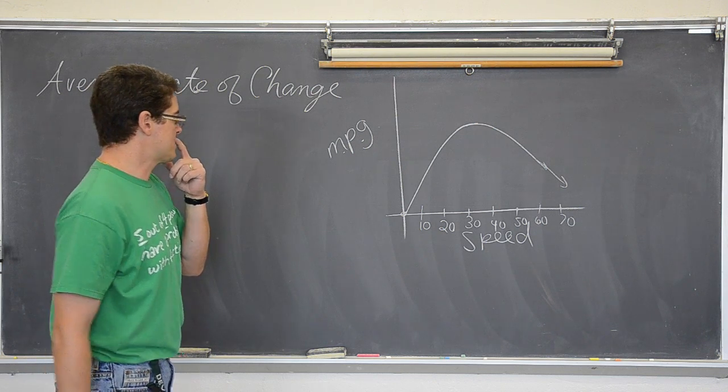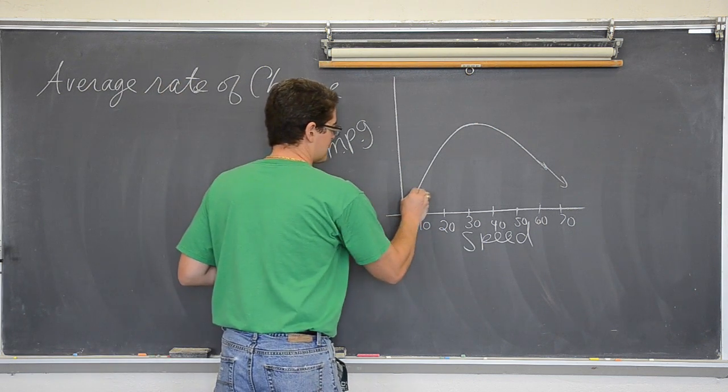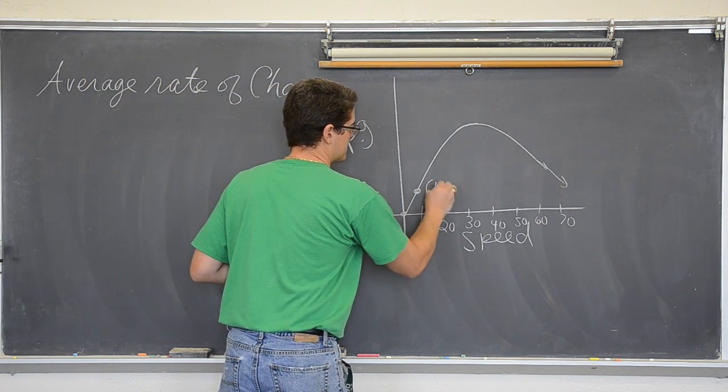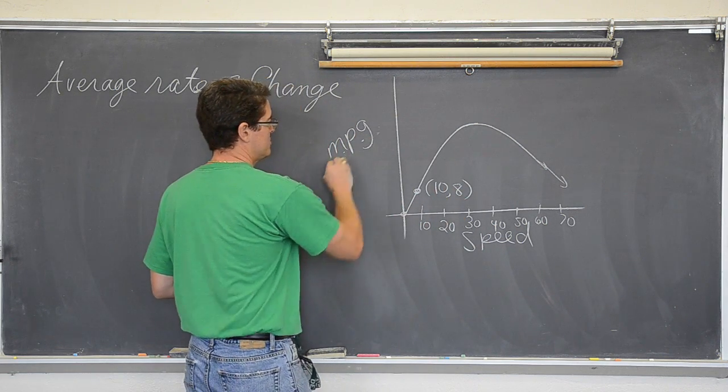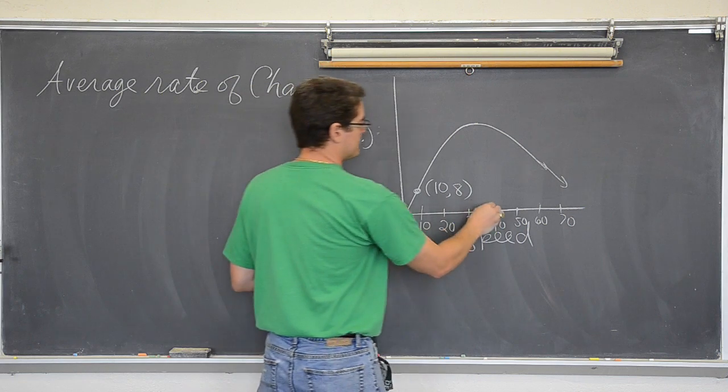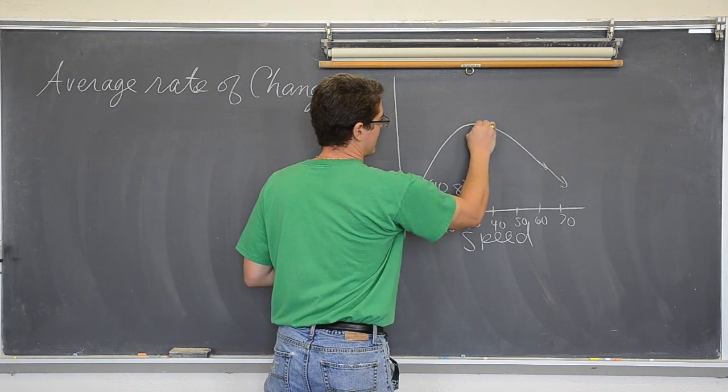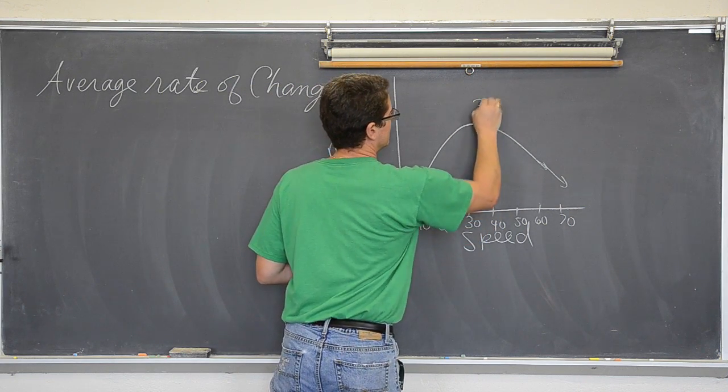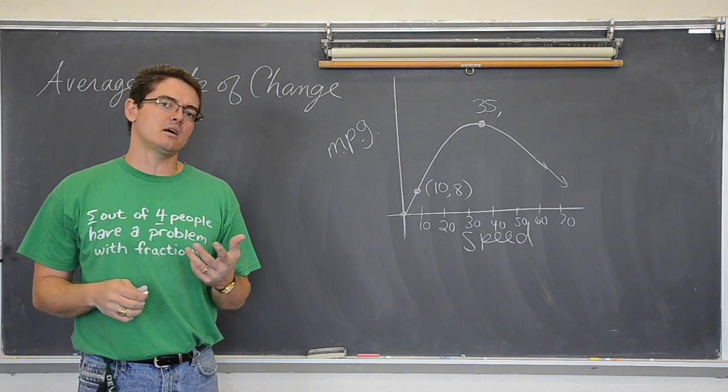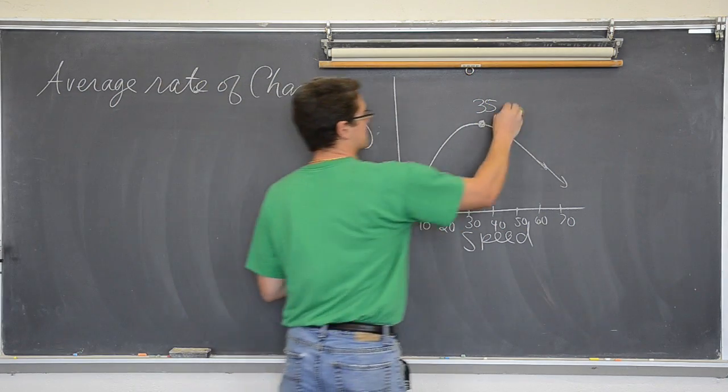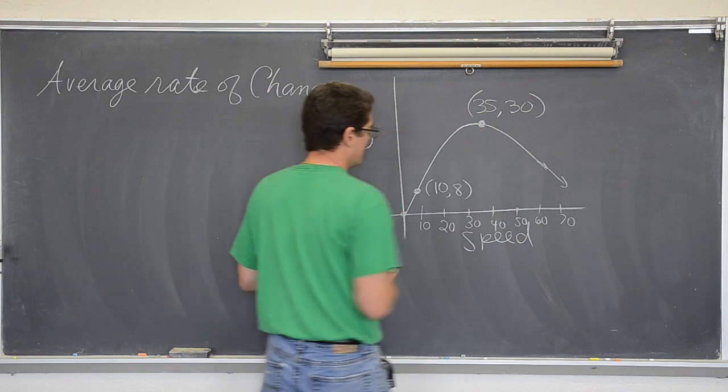Until eventually you start speeding up and going over the speed limit and your mileage starts to drop. So, let's just say that at 10 miles an hour, your car is getting 8 miles per gallon. And then at around 35 miles an hour, it reaches a maximum mileage efficiency of 30 miles per gallon.